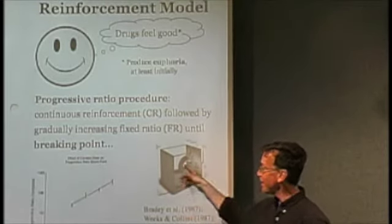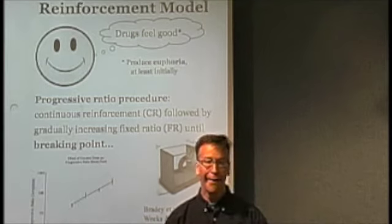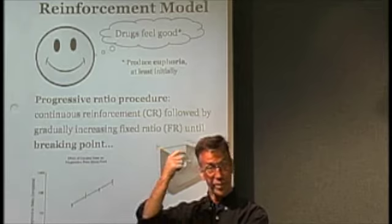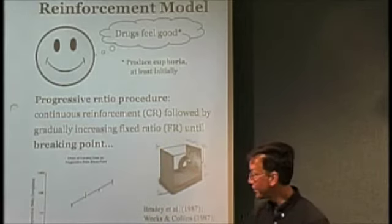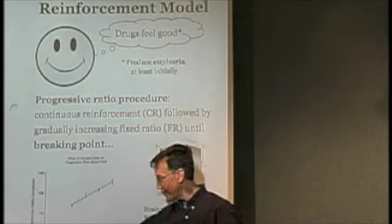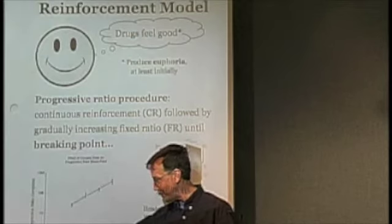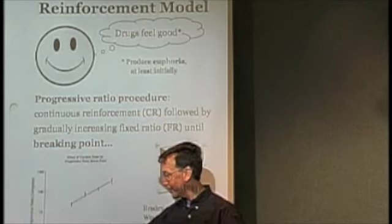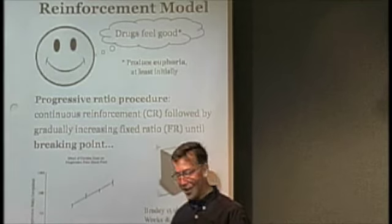So you take a rat, you stick it in a cage and you give it a couple of levers, and one of those levers will be linked to delivery of the substance you're testing. Let's say it's cocaine, and here's the various doses of cocaine: zero, no cocaine, the rat just gets saline. Here's a little bit of cocaine, a little more, a little more, and a little more.